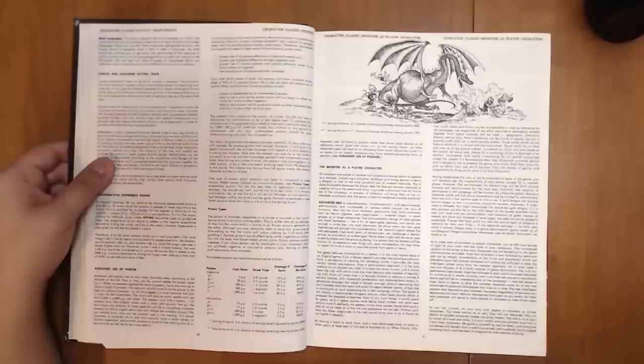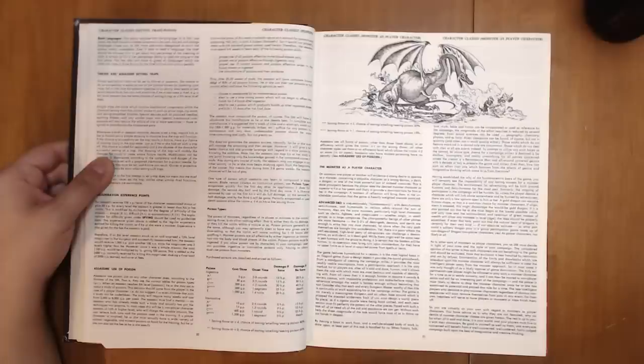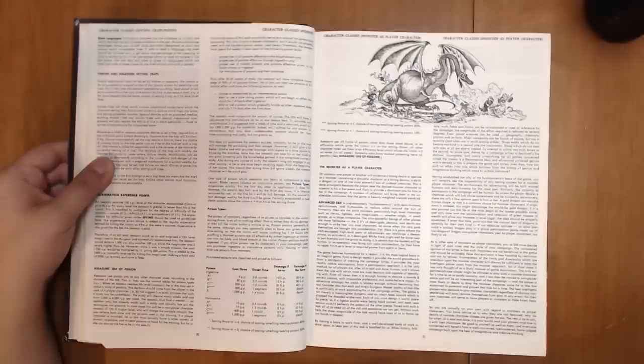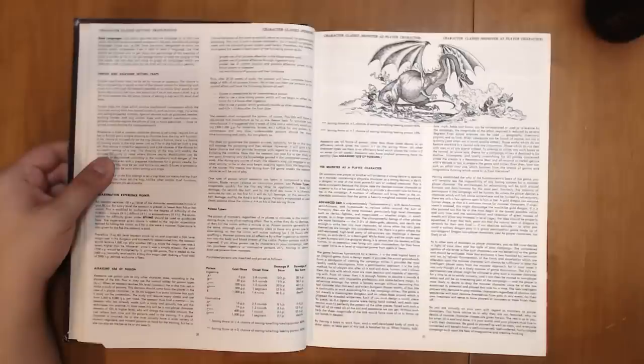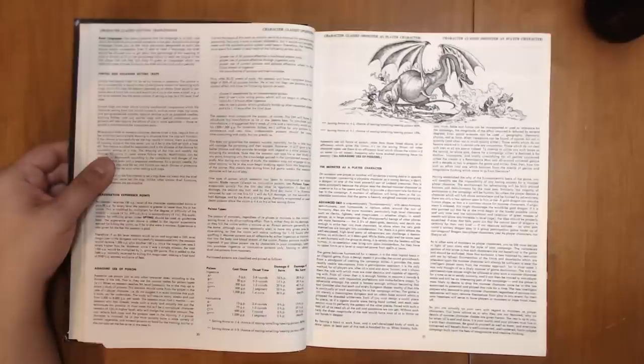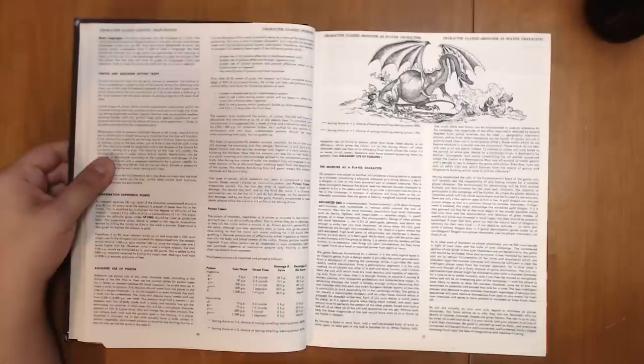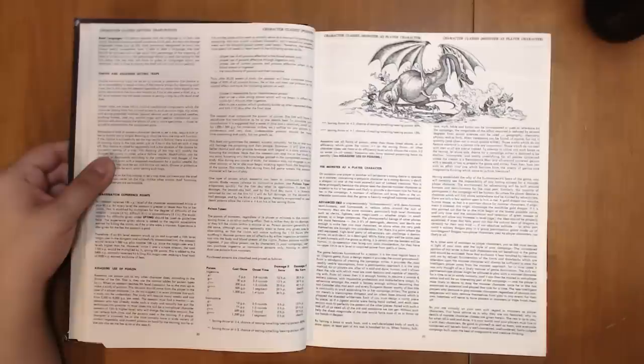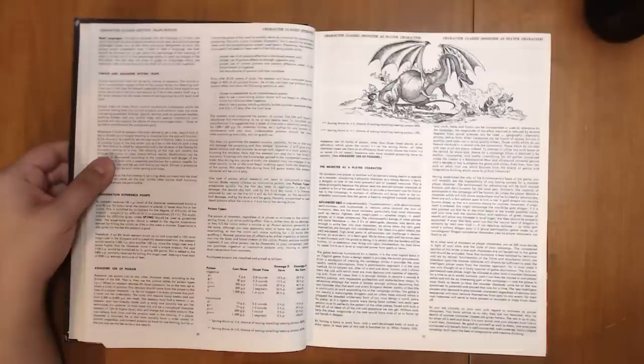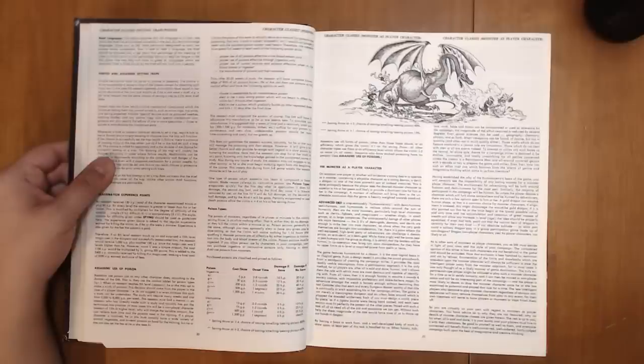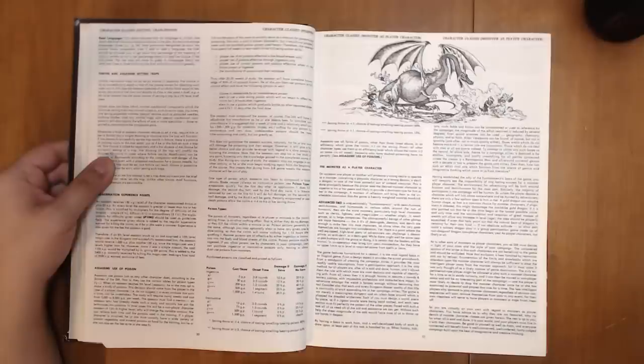The assassin must compound the poison, of course. The DM will have to adjudicate this manufacturer as he or she deems best. To simulate such manufacture, it is suggested that a week of time and a relatively small outlay, 200 to 1,200 gold pieces for materials, bribes, etc., suffice for any poison. Note that the assassin can stop his or her study at any point, knowing only the knowledge gained in the completed course of study. Also, during any course of study, the assassin may not engage in any other activity, or he or she must begin studying again from the beginning of the course. This means that during the 5-8 game weeks, the assassin character will be out of play.